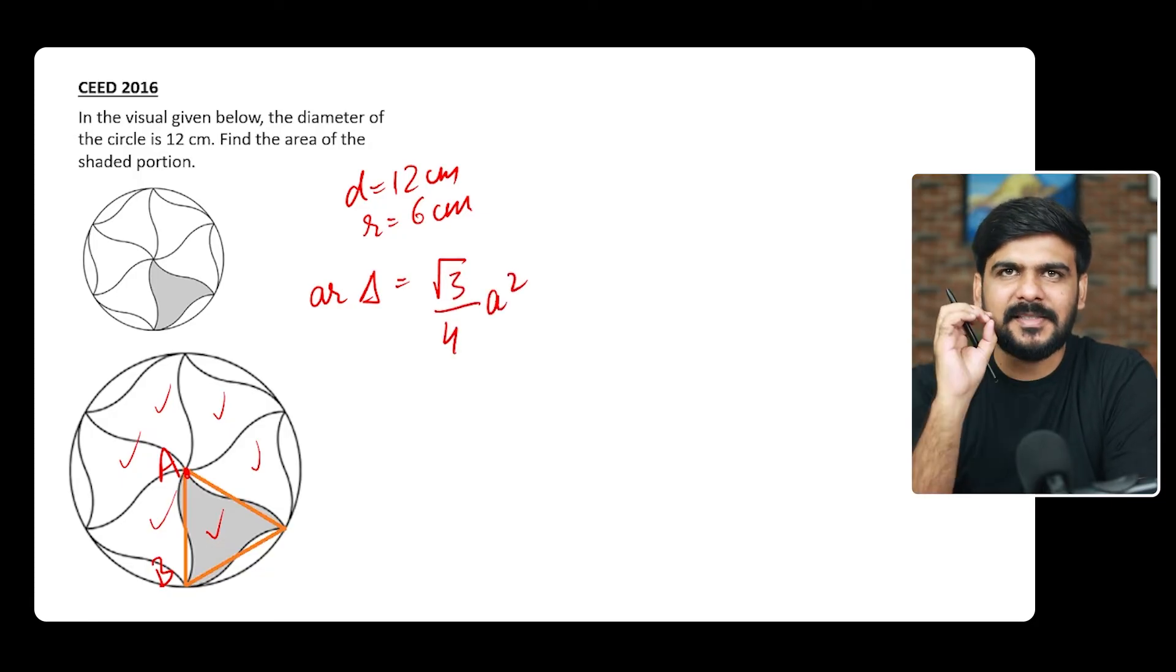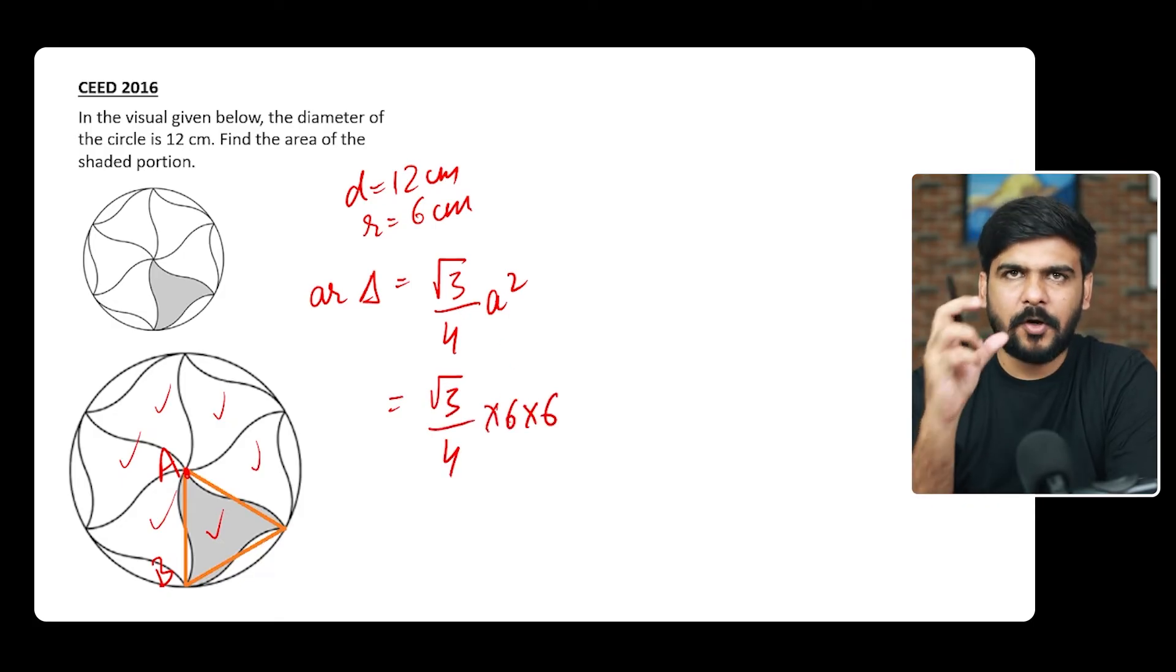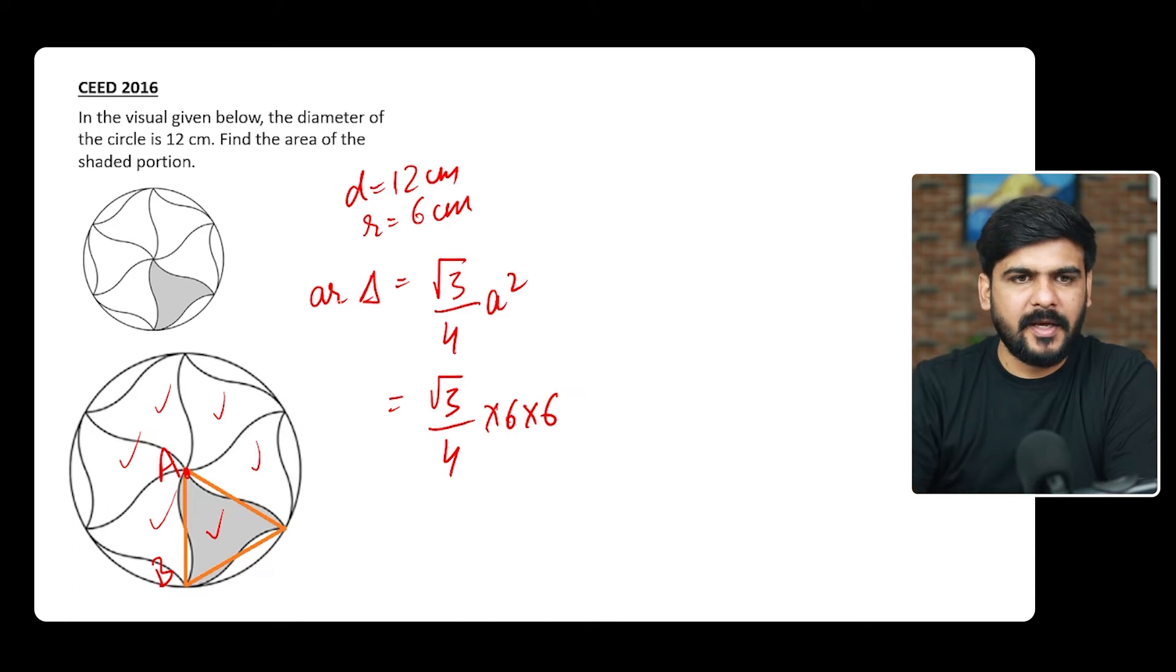Now here I want to say is that please remember the formula for equilateral triangle area, because this is one of the favorite topics for CEED. They will ask you questions on this and it will be really beneficial. Now when we put the side here, √3/4 and the side is 6, this is the area of one of the triangles.